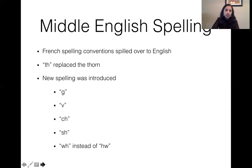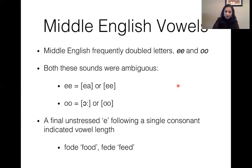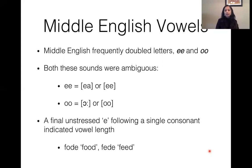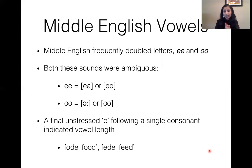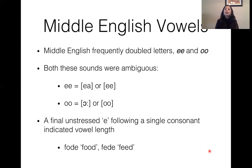In Middle English you often see double letters to show vowel length, such as double e and double o, though the sounds themselves were ambiguous. Instead of having the macron symbol used in Old English, in Middle English you double the letters. There was also a final unstressed e following a single consonant that indicated vowel length — the e in 'food' or 'feed' — which again indicated vowel length.